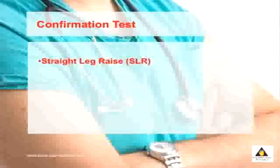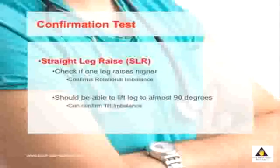A second test that also confirms these imbalances is called a straight leg raise. Simply lie on your back with your knees bent, then straighten one leg and raise it as high as you can until you feel a pulling in the back of your leg or in your lower back, then repeat for the other side. If you can lift one leg higher than the other, it confirms a rotational imbalance. People should normally be able to lift their leg to almost 90 degrees — if you can't, and both legs are similar, you may have tilt-type imbalances.